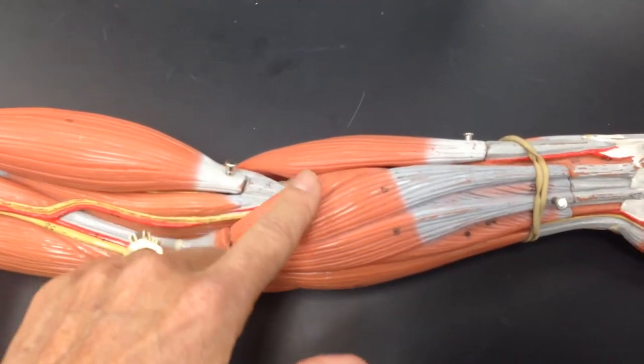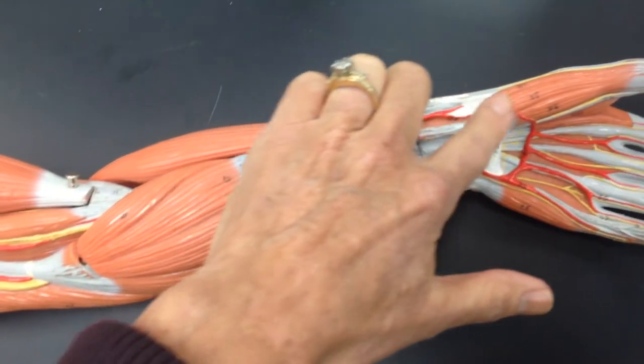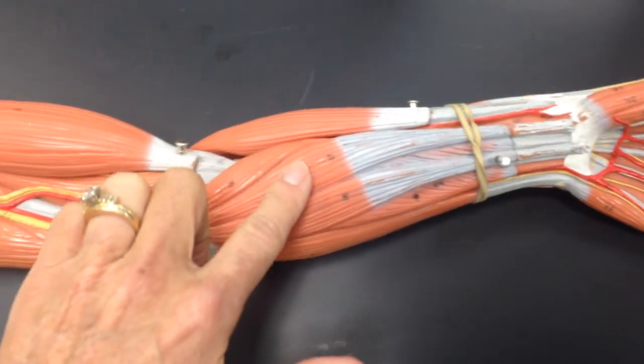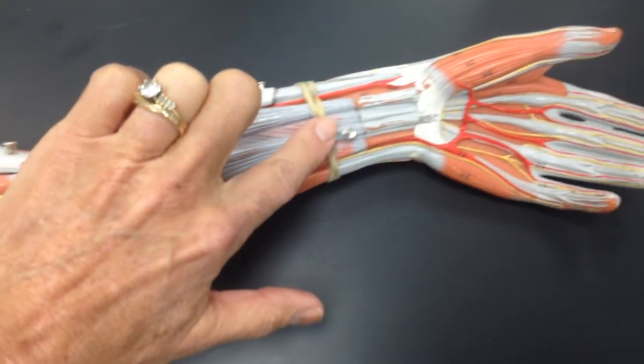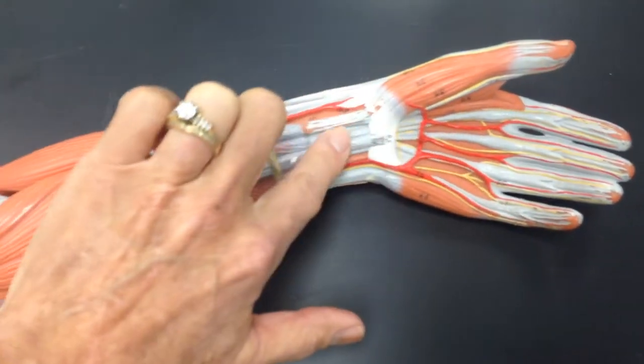Next to the pronator teres is the flexor carpi radialis. Next to the flexor carpi radialis is the palmaris longus, which goes to the entire palm.